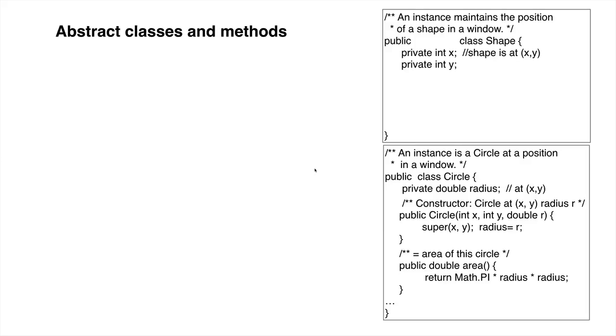We give an explanation of abstract classes and abstract methods. Consider class Shape and one of its subclasses, Circle, outlined to the right. There would be other subclasses, like Rectangle and Triangle.